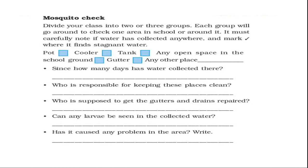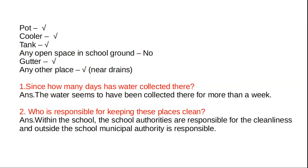The questions are: since how many days has water collected there? Who is responsible for keeping these places clean? Who is supposed to get the gutters and the drains repaired? Can any larva be seen in the collected water? Has it caused any problem in the area? Since the current situations are not good, I will give you the answers — please copy them in your textbook.